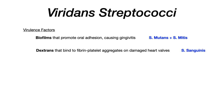The second virulence factor are dextrans. Dextrans bind to things called fibrin platelet complexes, and this allows them to aggregate on damaged heart valves. Among the three viridans strep organisms — mutans, mitis, and sanguinis — strep sanguinis is really the one that has the virulence factor of the dextrans. Mutans and mitis are the two that have strong biofilms promoting oral adhesion and therefore cause gingivitis and dental caries.